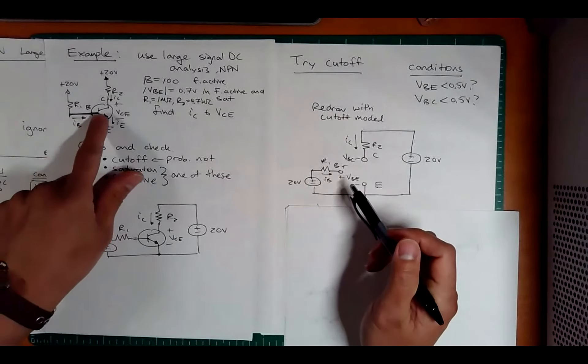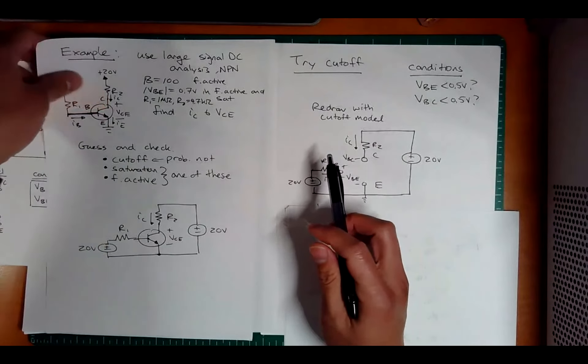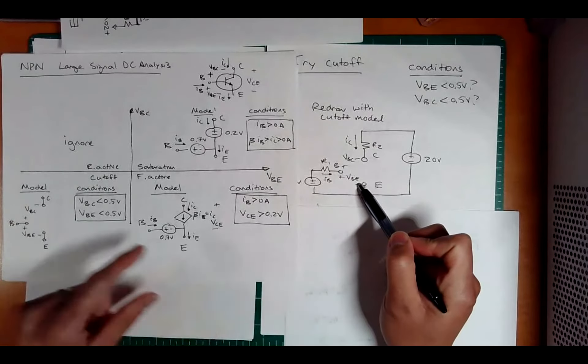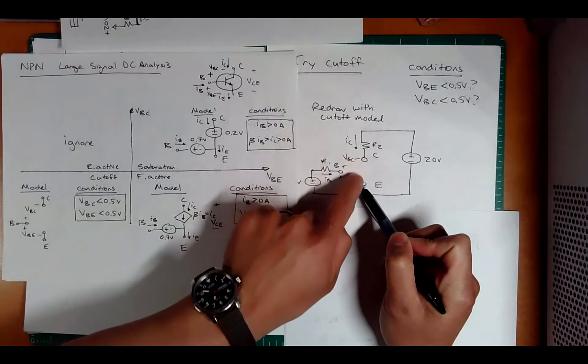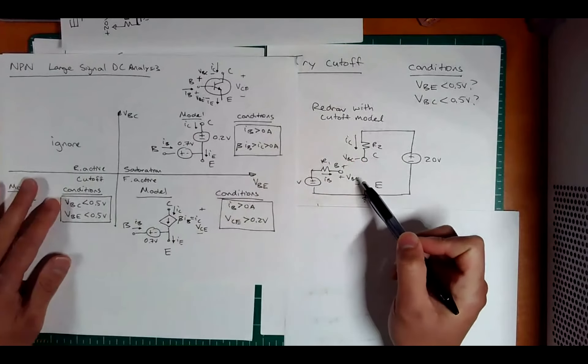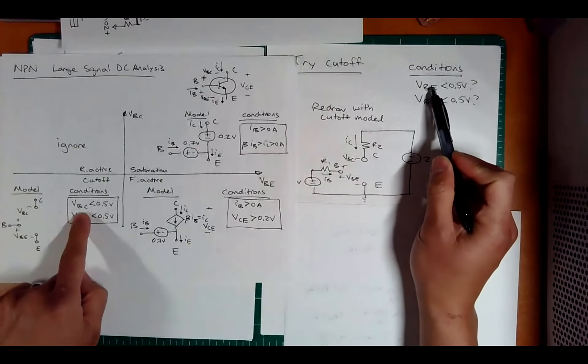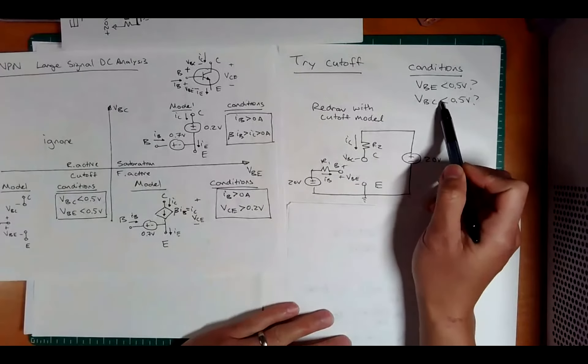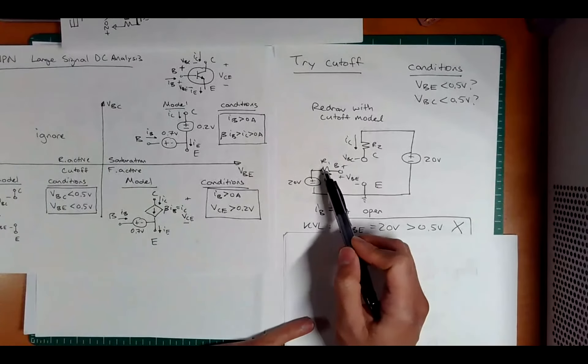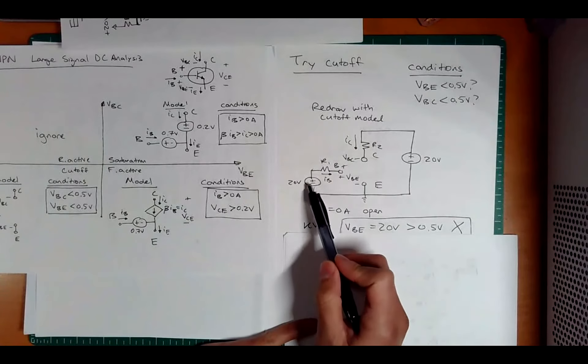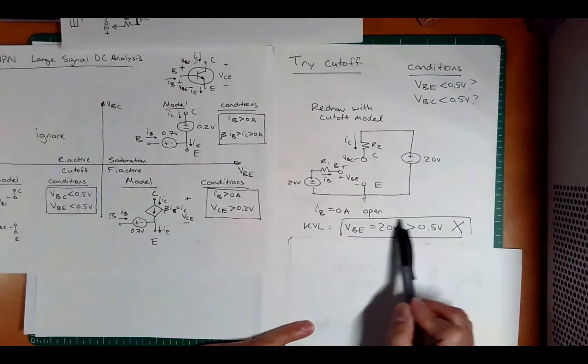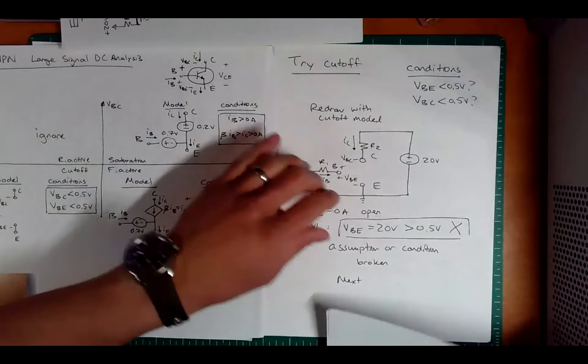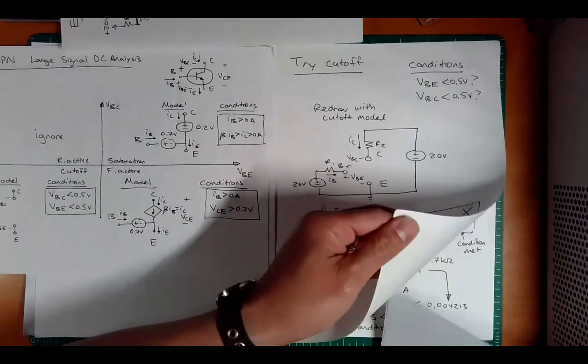But let's do the dumb thing and let's just guess if this is in cutoff. So if we'd guess that this is in cutoff, we would go here to our cutoff model and replace it with an open circuit. Notice, I'm also going to put in these voltage polarities correctly. What do I need to do? I need to check the conditions that these two voltages are negative, or not negative, but less than 0.5. If I calculate that they're less than 0.5, I'm correct. But if we look here, we know that this current is zero because it's open circuit. By KVL, this is 20 volts. Immediately we can eliminate this condition because this is greater than 0.5 broken. So cutoff is definitely not the answer.